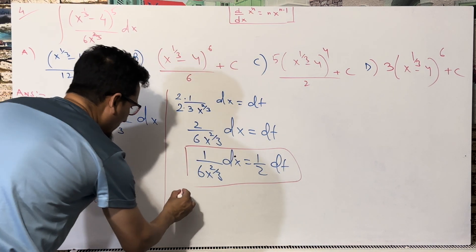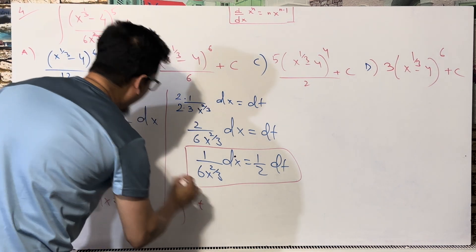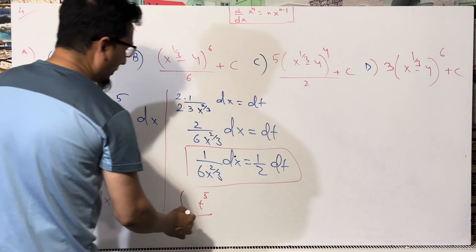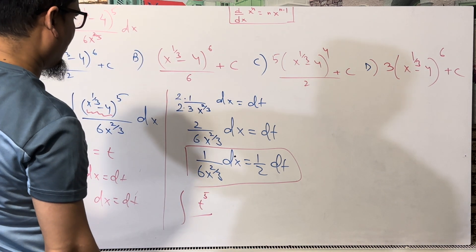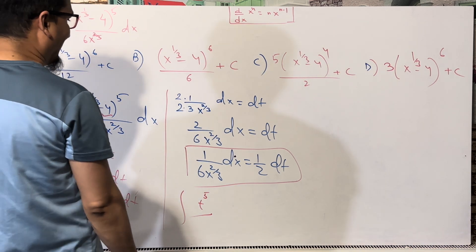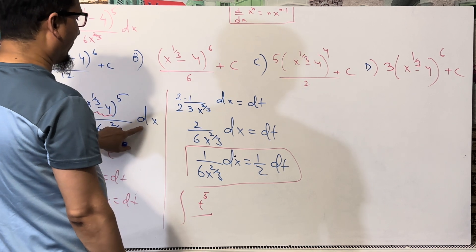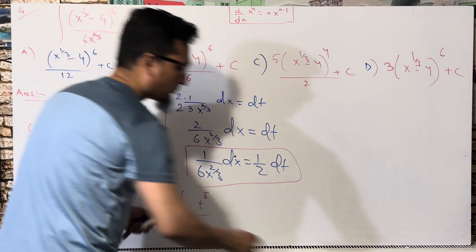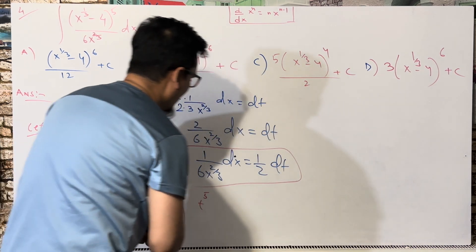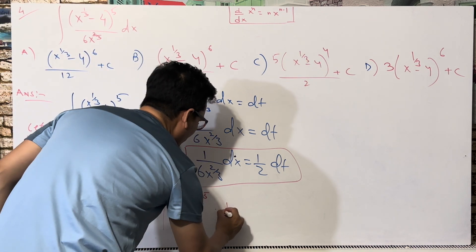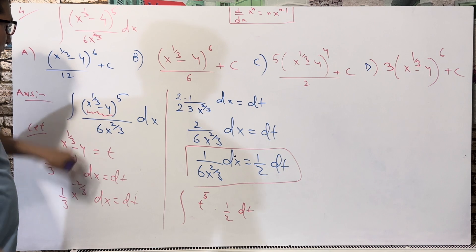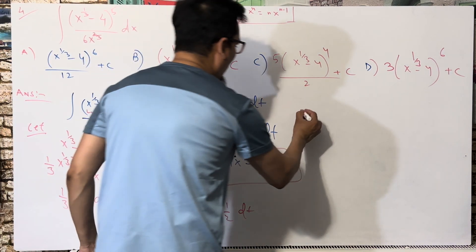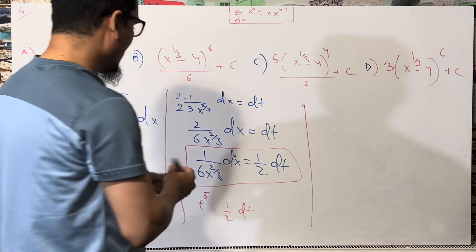Coming back to the question: the integral becomes t^5 times (1/6)x^(2/3) dx. We substitute (1/6)x^(2/3) dx = (1/2) dt. So the integral is the integral of t^5 · (1/2) dt. Since 1/2 is a constant, it comes outside: (1/2) integral of t^5 dt.